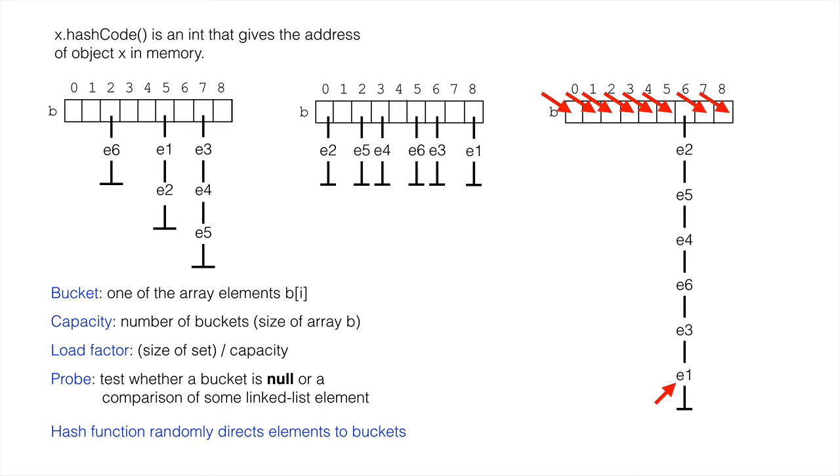Thus, on the average, 7 plus 8 divided by 9, or 15 divided by 9 probes, are needed. That's less than two probes.